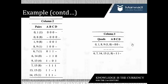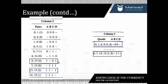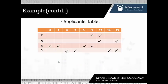On obtaining column 3, we observe that the minterms like 9, 13 and others in column 3 cannot be further paired because they differ in more than one bit in their binary representation. We name these terms P, Q, R, and S. Since further pairing of these terms is not possible, they are called prime implicants.